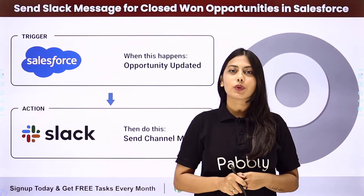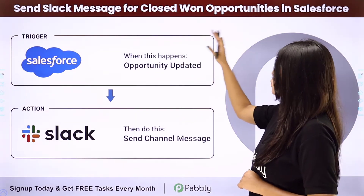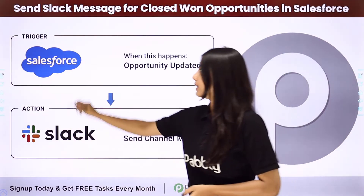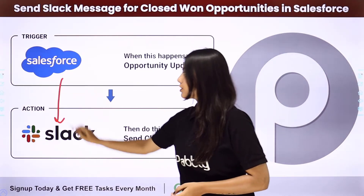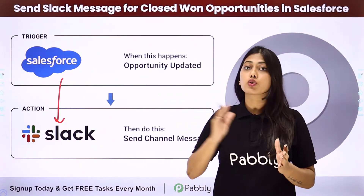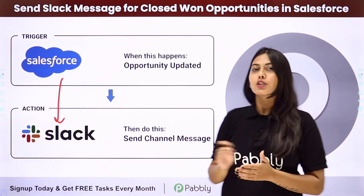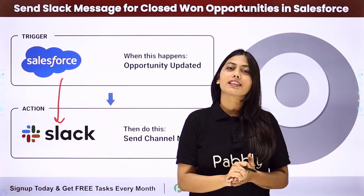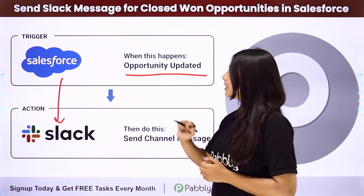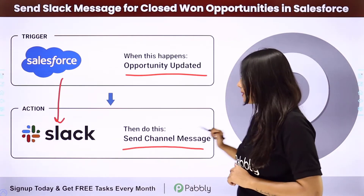Hello everyone. In this video we are going to learn how to send a Slack message for a Closed Won opportunity in Salesforce. We will learn how to integrate these two applications so that whenever an opportunity is updated to Closed Won in Salesforce, a message will be sent in a Slack channel. We are going to create this automation with the help of Pably Connect, where the trigger will be opportunity updated in Salesforce and the action will be to send a channel message in Slack.